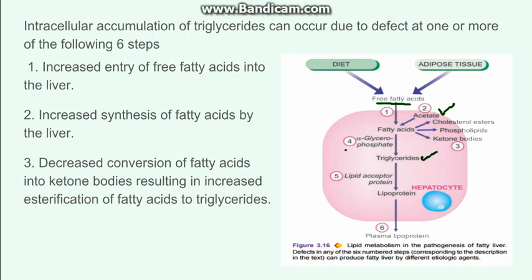The fourth problem can be increased level of alpha glycerophosphate, which will lead to an increase in triglyceride. The fifth step which can be problematic is decreased level of lipid acceptor protein, so that lipoproteins are not being formed from the triglycerides. Lastly, there can be obstruction of the excretion of lipoprotein from the hepatocyte into the plasma.